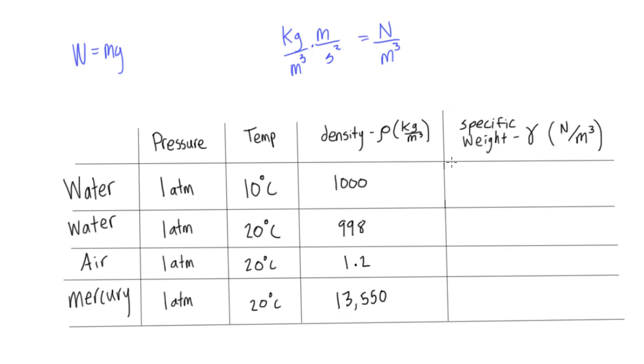So all we have to do then is we just multiply our density times acceleration due to gravity, and that'll give us our specific weight. Another way we can look at this is if we have kilograms per meters cubed, that's equal to mass over volume. And if we want to find weight, all we have to do is multiply this by g. So then we'll have mg over volume. And mg will give us the units of newtons, as we found over here. So we'll get newtons per meters cubed, and that's these guys.